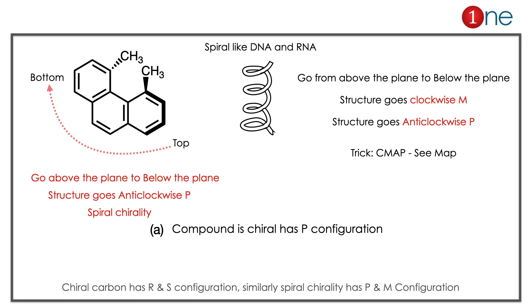If you look at the structure, it is above and below, but really it is a helical compound — called spiral chirality, or axial chirality. It is like DNA and RNA. To find the configuration: if the structure goes top to bottom clockwise, it is M; anti-clockwise means it is P. Here, going top to bottom it is anti-clockwise, so it is P. The compound is chiral with P configuration. Spiraling clockwise is M; anti-clockwise is P — like R and S configuration.